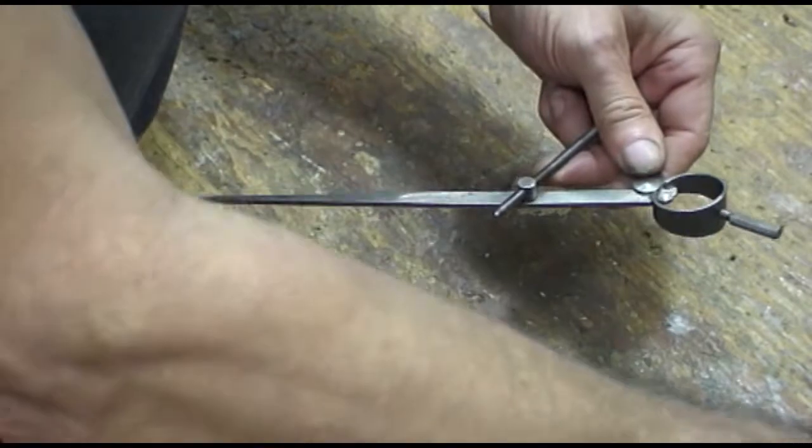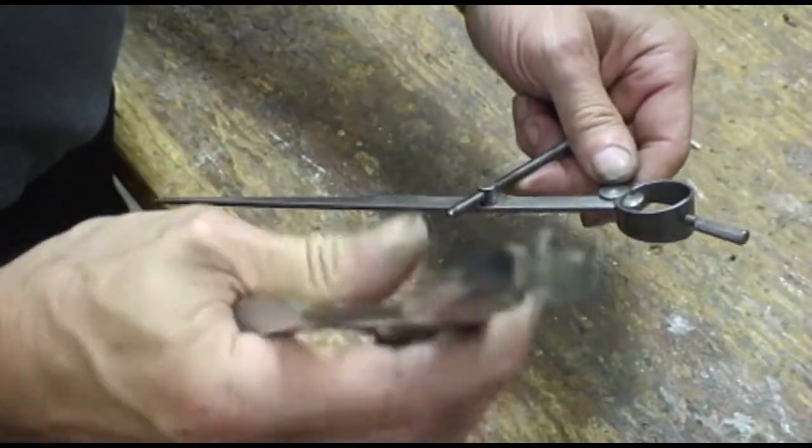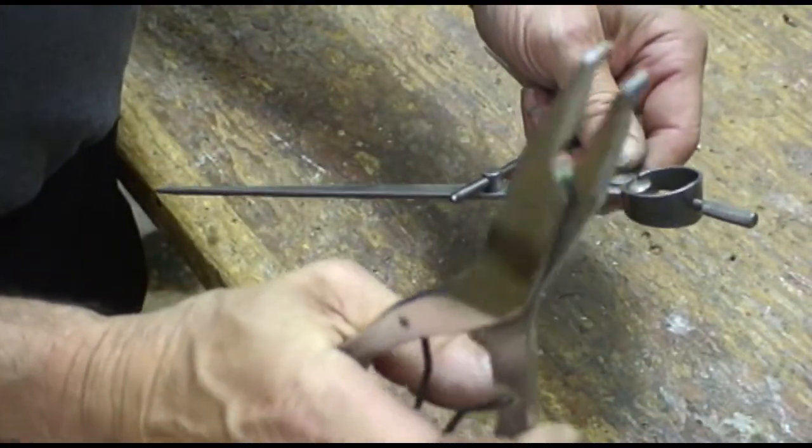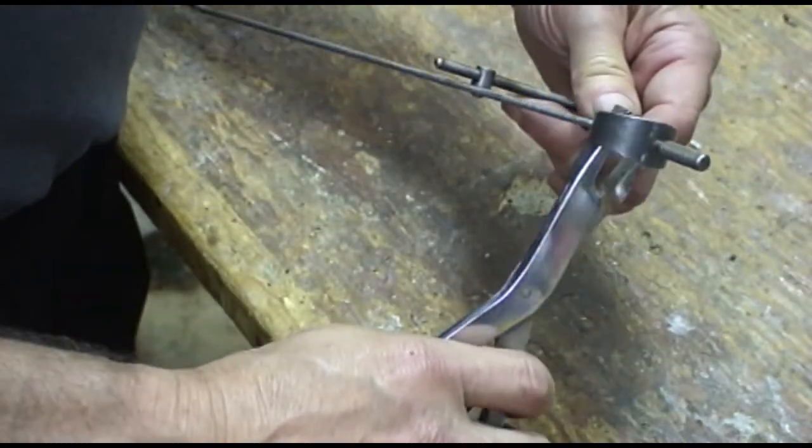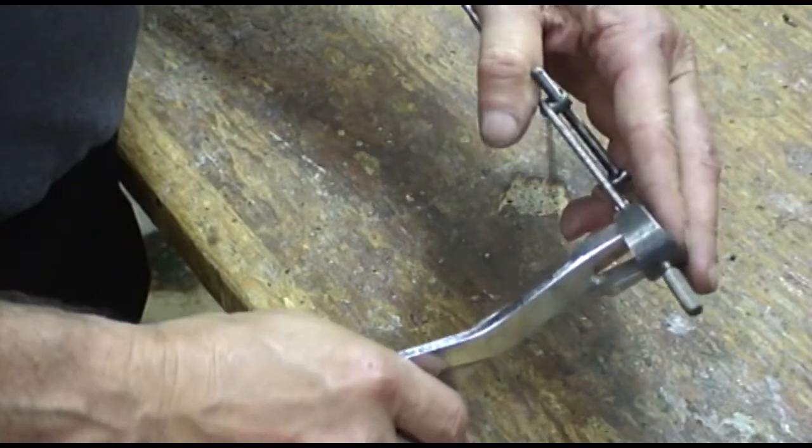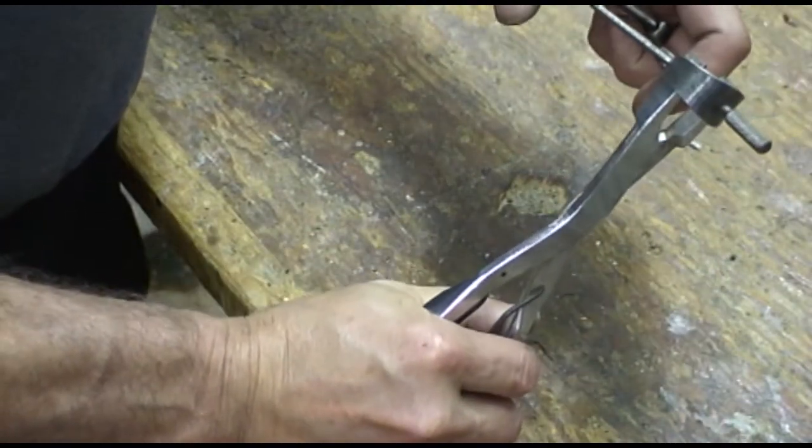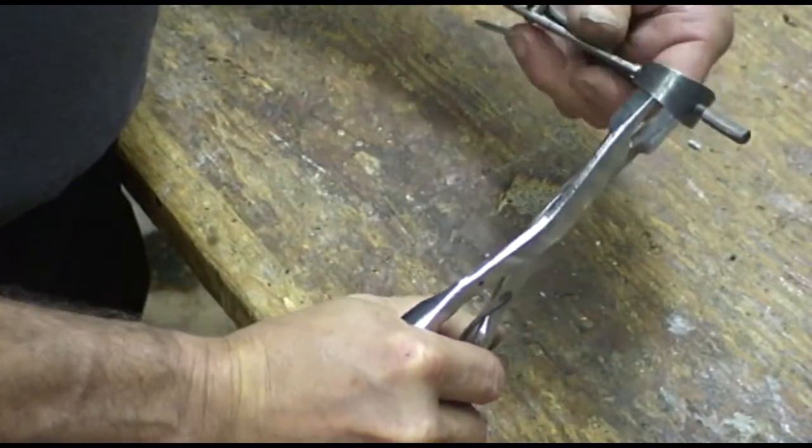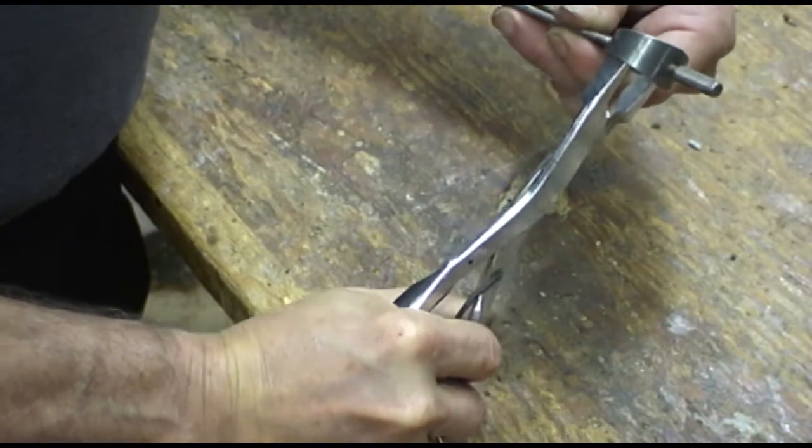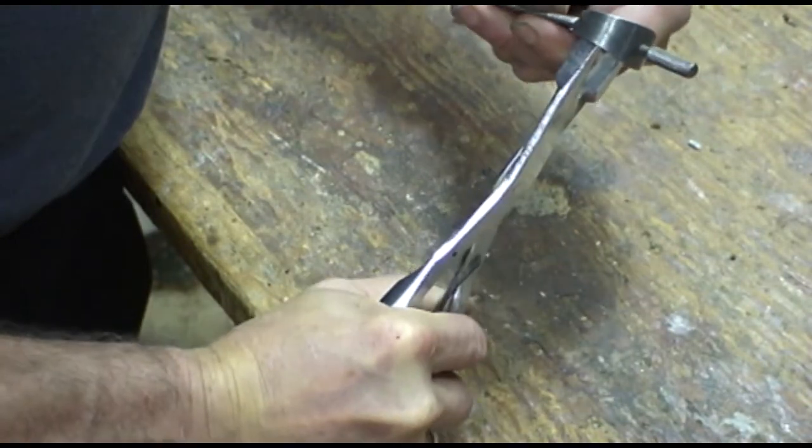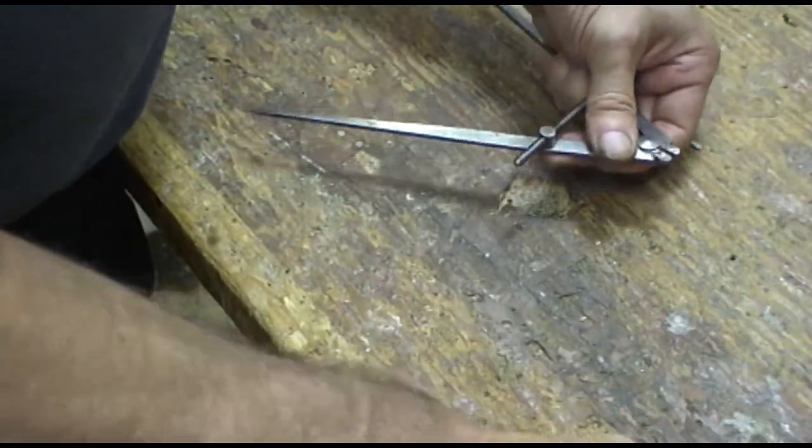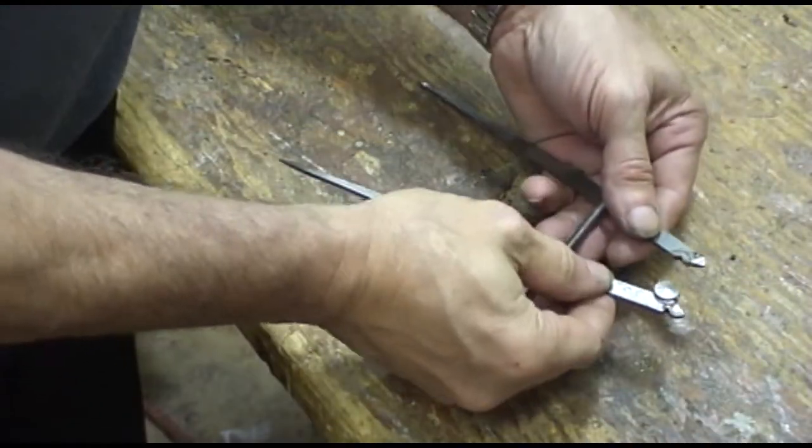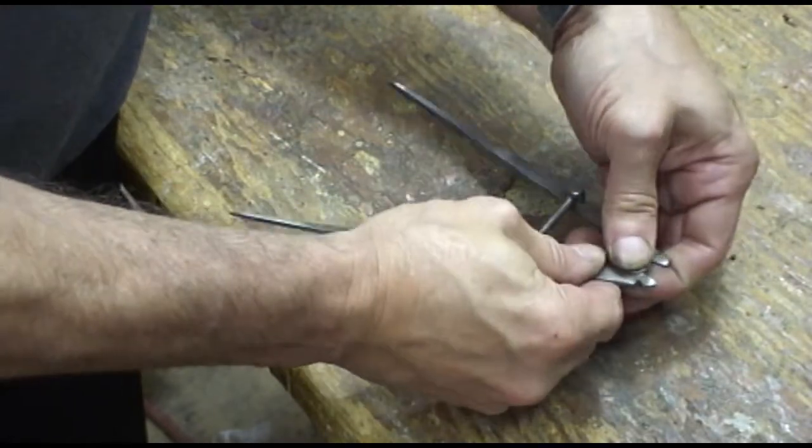Now, to take the spring off, a real easy way is these are piston ring pliers to spread piston rings. So if I put them in here and just spread them a little bit, it comes right off. And then the pivot comes out.